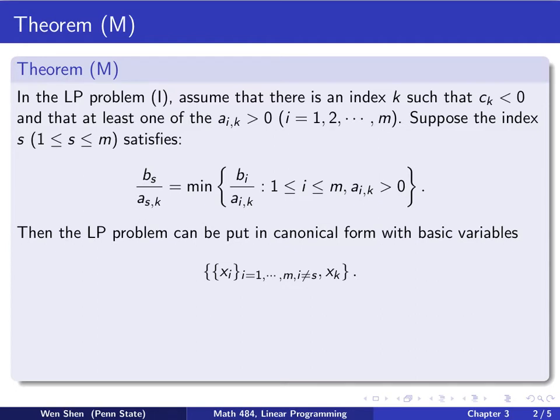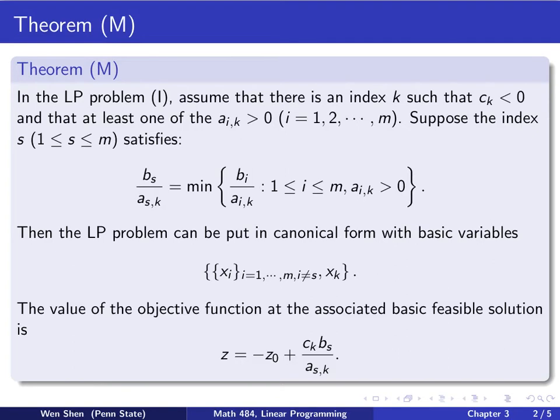If that is the case, then the LP problem can be put in canonical form with a new set of basic variables. I would take the old set i from 1 to m, among them I remove the one with index equal to s, and then I add x_k also into the set. So the total number of basic variables are unchanged. With this new set of basic variables, the value of the objective function will be expressed in this expression, and then you will have this term which is actually negative and will make the z value smaller after taking the step. This is a very important theorem which we will be using at every step of the simplex method.